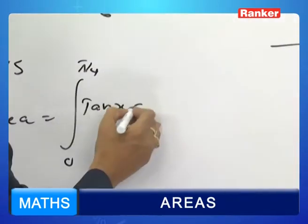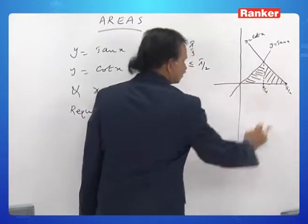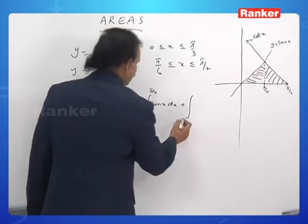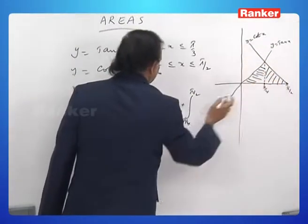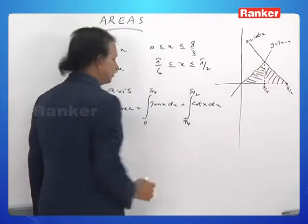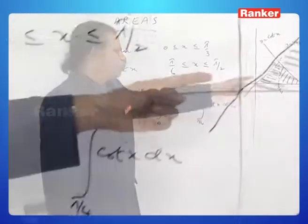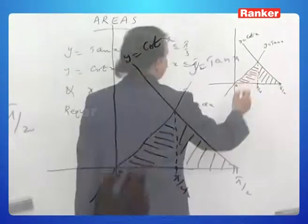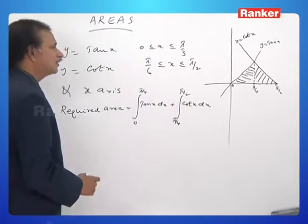Therefore, it is tan x dx plus from this place to that place, it is pi by 4 to pi by 2. Therefore, integral pi by 4 to pi by 2, what is this curve? y equals cot x dx. The required area is divided into two pieces.